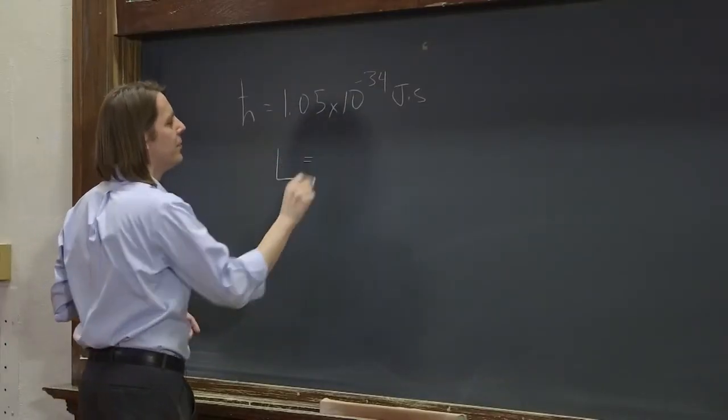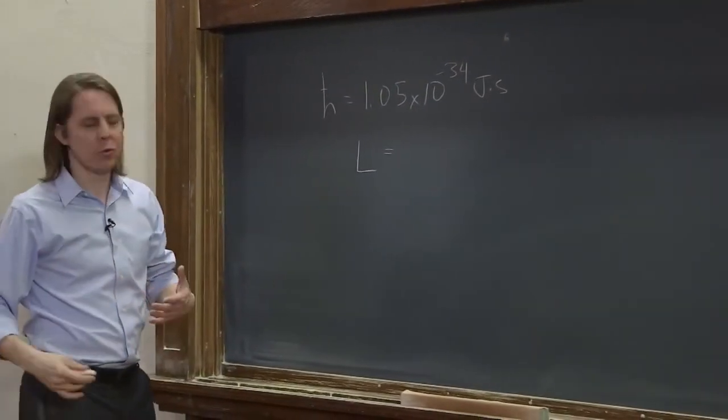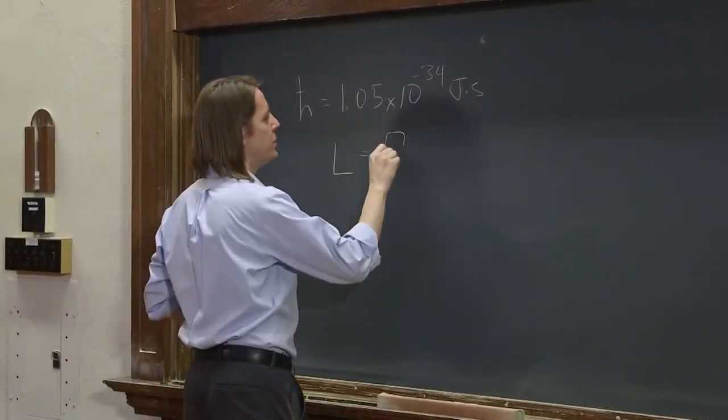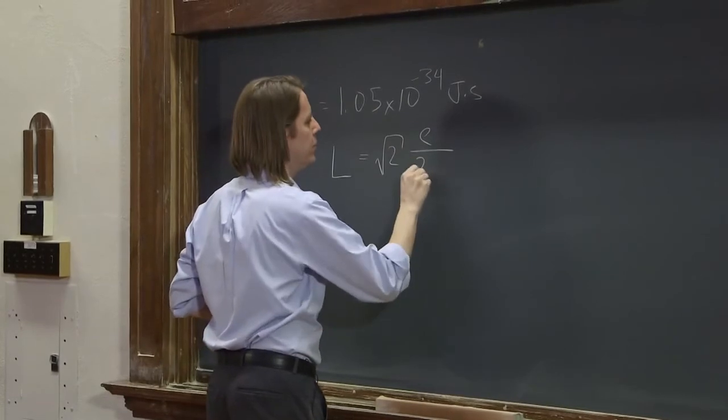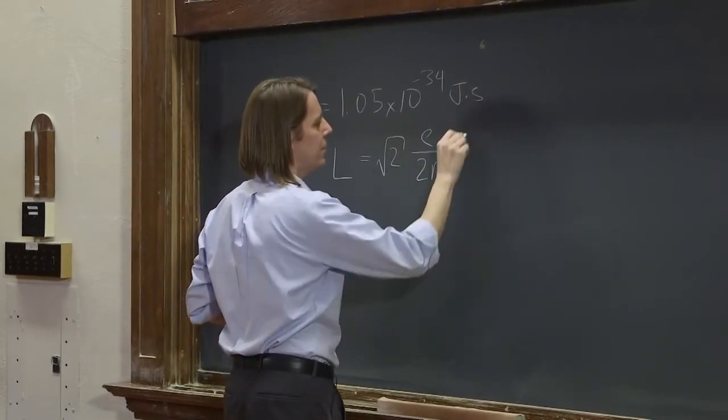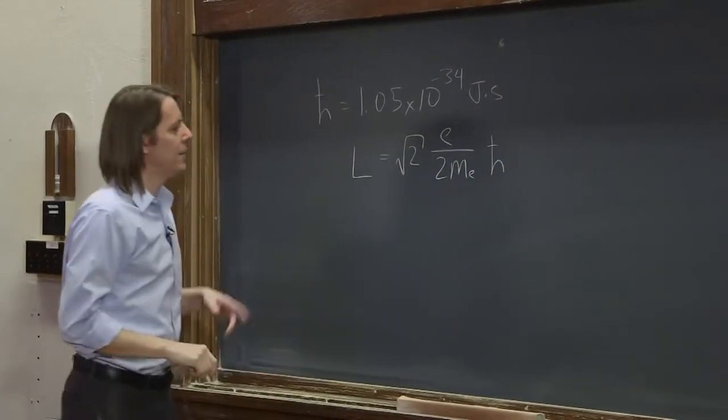of this electron, its orbital angular momentum, would actually be the square root of 2 h-bar, e over 2 times the mass of the electron h-bar. This is the lowest value.